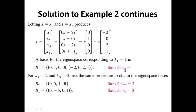Recall that Lambda₁ had multiplicity 2. Using the same procedure for Lambda₂ equals 2 and Lambda₃ equals 3: the basis for the eigenspace of Lambda₂ equals 2 is {[0,5,1,0]}, and the basis for the eigenspace of Lambda₃ equals 3 is {[0,-5,0,1]}.